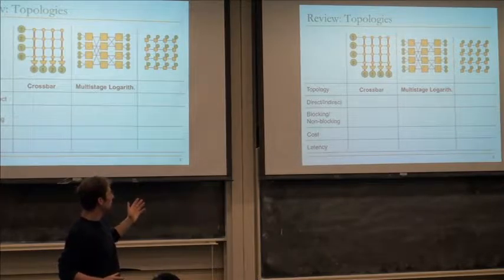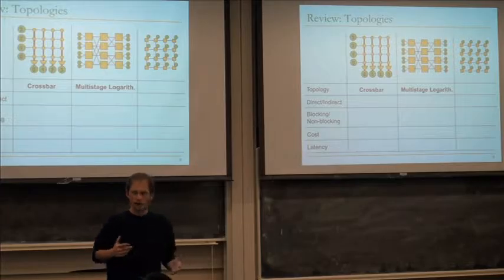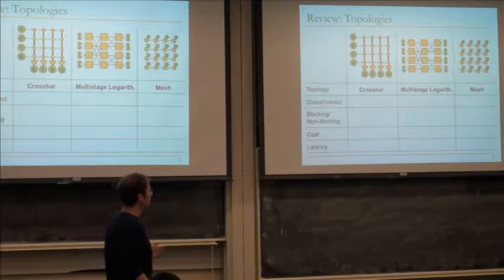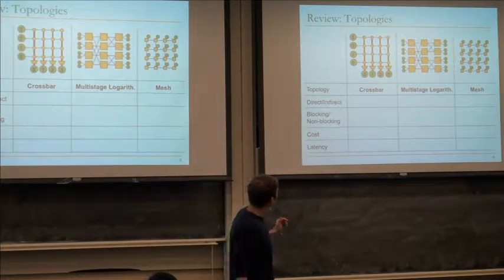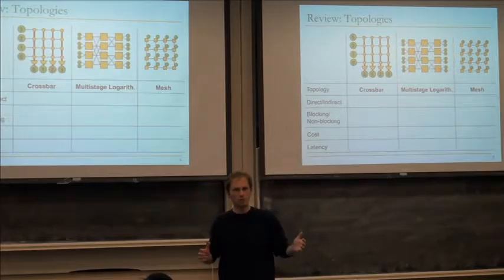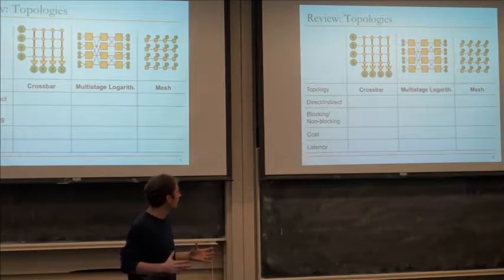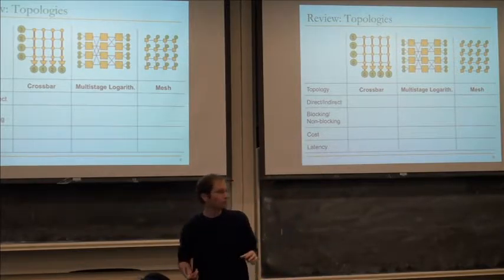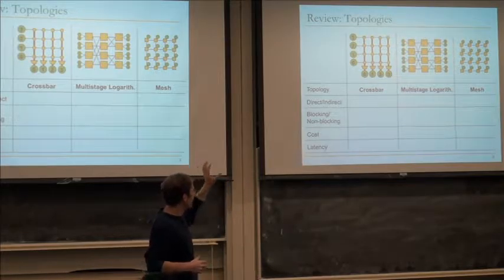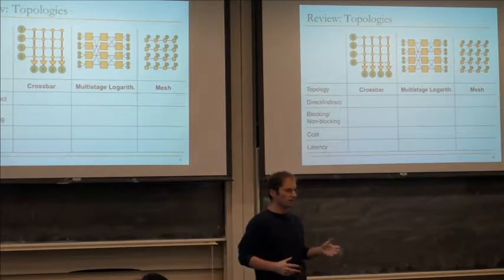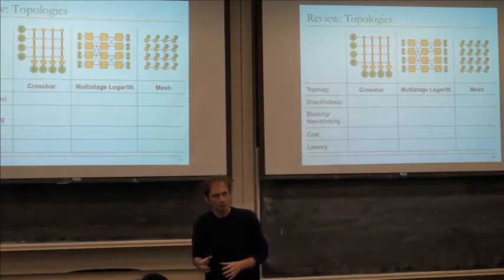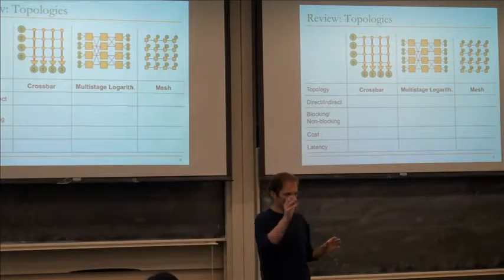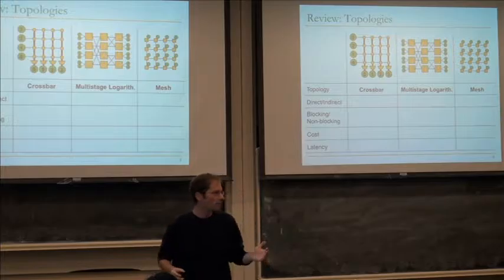The next class of networks we talked about are multi-stage logarithmic depth networks. There are different ways to build these — omega networks, delta networks, Banyan networks — but they all look similar at a high level. They're composed of switching elements in the middle of the network, with inputs on the left and outputs on the right. These switching elements move traffic around on different links so it gets from source to destination, and the way the switches connect gives various properties like whether the network is blocking or non-blocking.